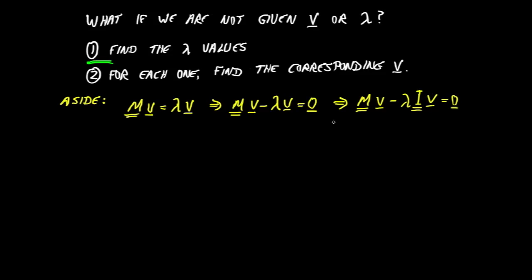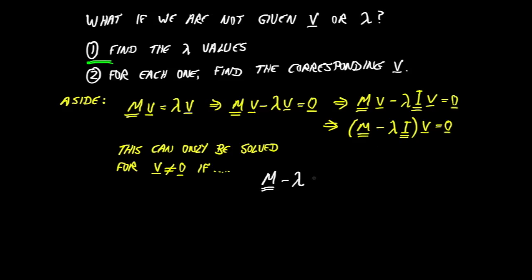The identity doesn't change the equation, but now I can factor out both those two matrices, the M and the minus lambda times the identity. That's a matrix. I can factor those out and it allows me to write that line. Now, that form of the equation, it turns out this can only be solved for any interesting V, any V other than just 0s, if the following equation is true, which we can easily prove, but we're not going to prove in this video.